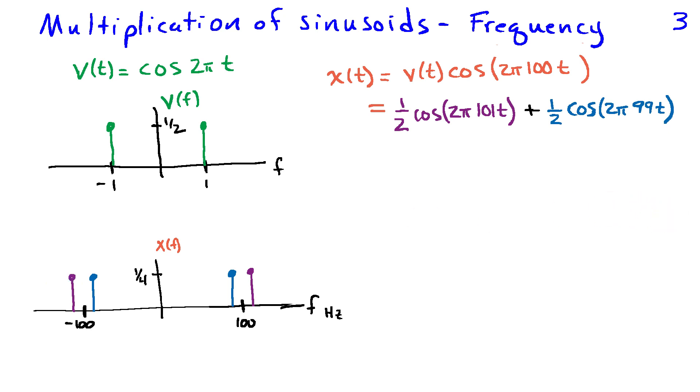And then I've got in blue the sinusoid with 99 hertz. And so those are these two components, one at 99 and one at minus 99. So we can think about x of f as having taken V of f and shifting it. We've shifted V of f to the right by 100 hertz. That gives us these two terms.